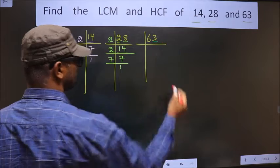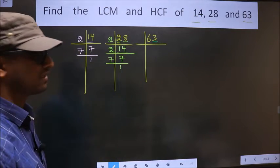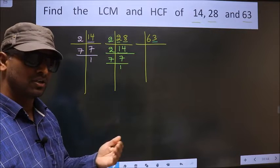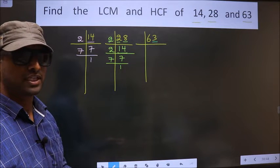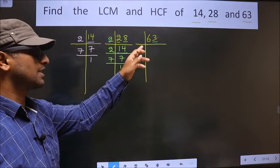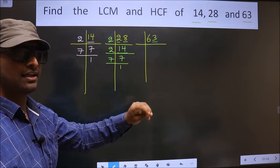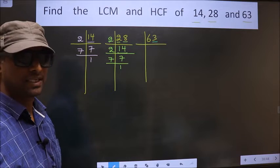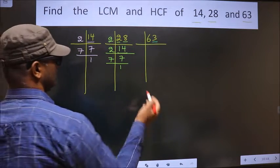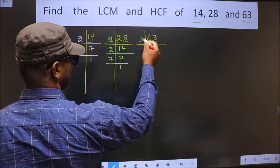Now here last digit is 3, not even, so this number is not divisible by 2. To check divisibility by 3, we should add the digits. That is 6 plus 3, we get 9. Is 9 divisible by 3? Yes. So this number is also divisible by 3. So we take 3 here.